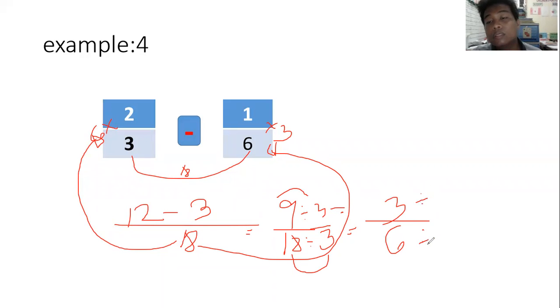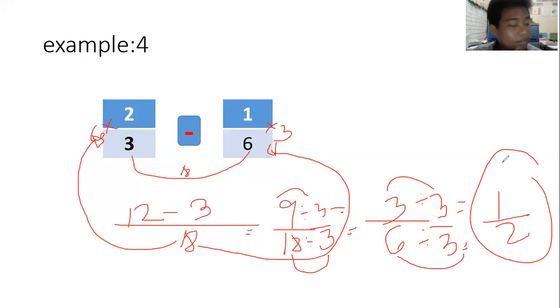Nine divided by three equals three. Eighteen divided by three equals six. Can we still simplify three-sixths? Yes, we can still simplify that one by three because both numbers are divisible by three. Three divided by three equals one, and six divided by three equals two. So the answer is one-half.